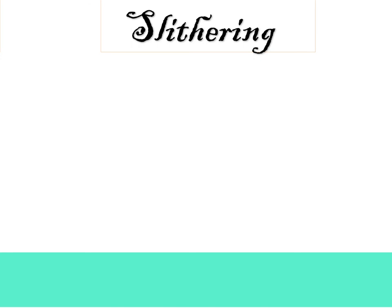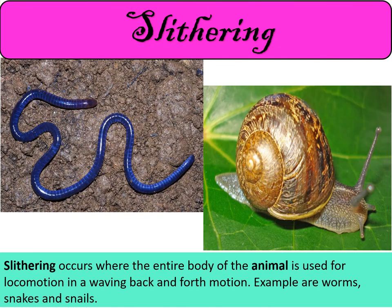Children, the last movement of animals is slithering. What is slithering? Slithering occurs where the entire body of the animal is used for locomotion in a waving back-and-forth motion. Examples are worms, snakes, and snails.